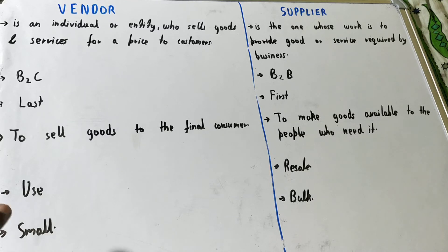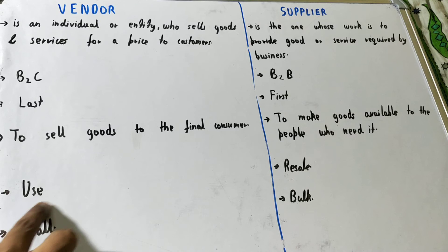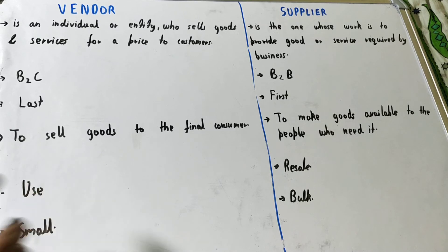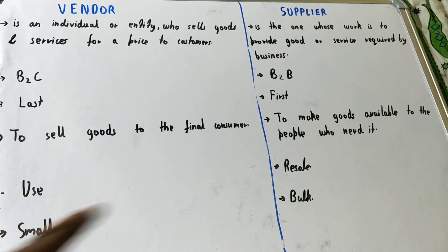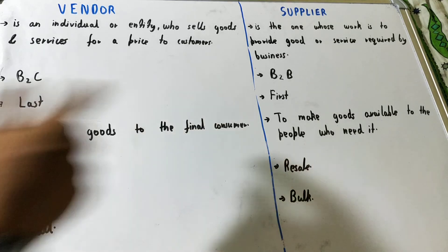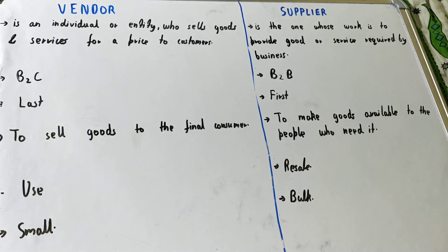If we talk about the purpose of sale, in the case of a vendor it is basically for use — the customer actually needs to use that particular product. But in the case of a supplier, it is for resale, because the businesses the supplier provides goods to will in turn sell them to end customers.